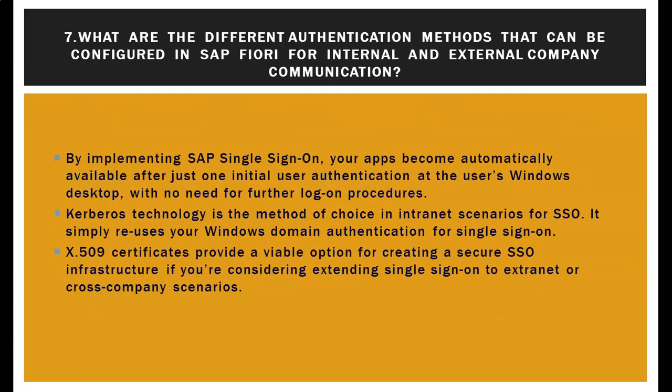What are the different authentication methods that can be configured in SAP Fiori for central and external communication? By implementing SAP Single Sign-On, apps become automatically available after just one initial user authentication at the Windows desktop, with no need for further logon procedures. Kerberos technology is the method of choice in intranet scenarios for SSO — it reuses your Windows domain authentication. X.509 certificates provide a viable option for creating a secure SSO infrastructure, particularly for extending single sign-on to extranet or cross-company scenarios.